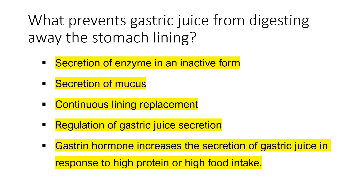Another protection is that gastric glands do not secrete acidic gastric juice constantly — their activity is regulated by a combination of nerve signals and hormones. When you see, smell, or taste food, a signal from your brain stimulates the gastric glands to secrete more gastric juice. As food arrives in your stomach, it stretches the stomach walls and triggers the release of the hormone gastrin, which increases the secretion of gastric juice.